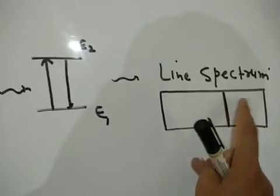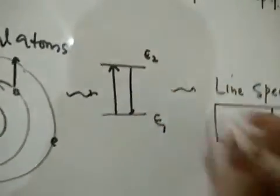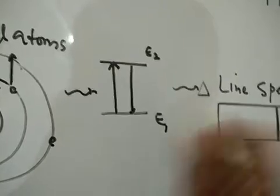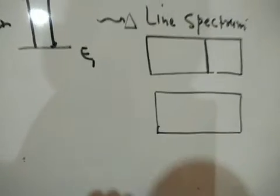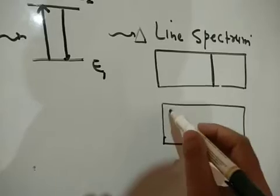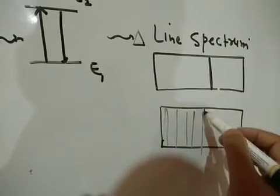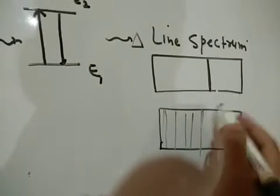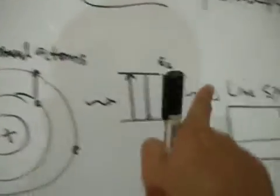The absorbed wavelength produces a dark line — that is the absorption spectrum. Contrary to that, when the electron comes back and releases energy, if we pass that energy through a prism, we get many colored lines. So in atomic absorption you get a single dark line, while in emission through a prism you get many colored lines. This is the general atomic absorption and emission spectra.